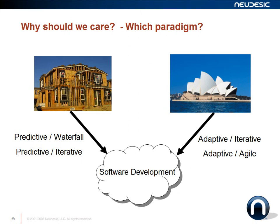In the early days of software development that was probably okay, but in today's environment customers are not willing to wait 9 to 12 months before they see the outcome of their software development. They want something that can address changes in their needs as they go along the life of the project — something more adaptive.